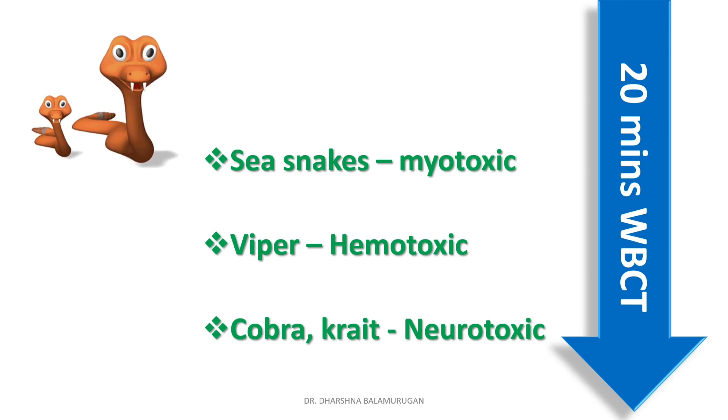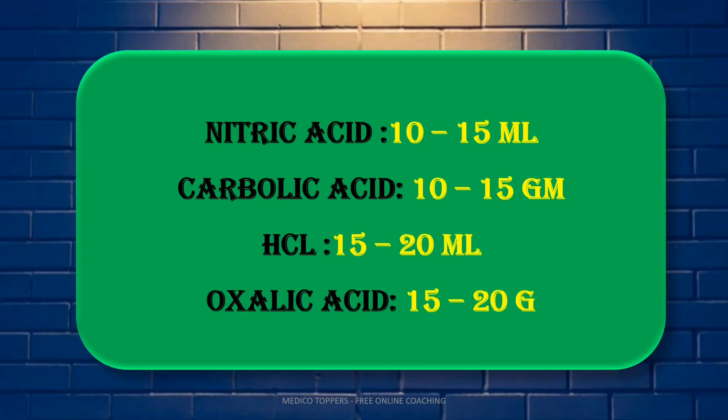Next, fatal doses of some acids: nitric acid 10–15 ml, carbolic acid 10–15 grams, hydrochloric acid 15–20 ml, oxalic acid 15–20 grams. Sulphuric acid has the lowest fatal dose at 5–10 ml. Note: nitric acid is measured in ml but carbolic acid is in grams.